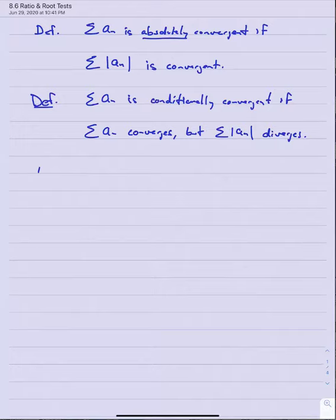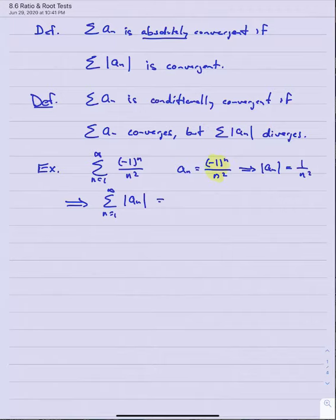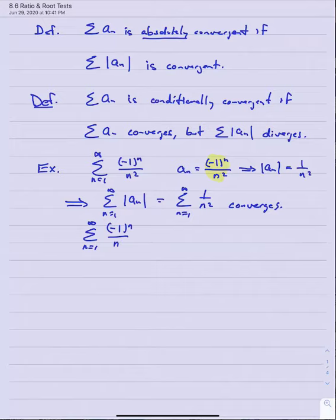As a quick example, consider the series n equals one to infinity of (-1)^n over n squared, where a_n equals (-1)^n over n squared. The absolute value of a_n is just 1 over n squared, so the series of absolute values is the sum of 1 over n squared, which we know converges. Therefore, the series n equals one to infinity of (-1)^n over n squared converges absolutely.